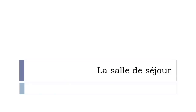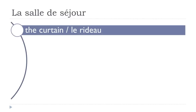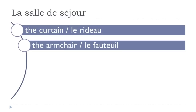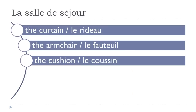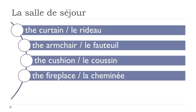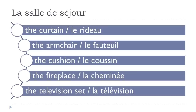La salle de séjour — the living room. Vocabulary: 'le rideau' (curtain), 'le fauteuil' (armchair — a slightly tricky word to pronounce: fau-teuil), 'le coussin' (cushion), 'la cheminée' (fireplace), 'la télévision' (television).